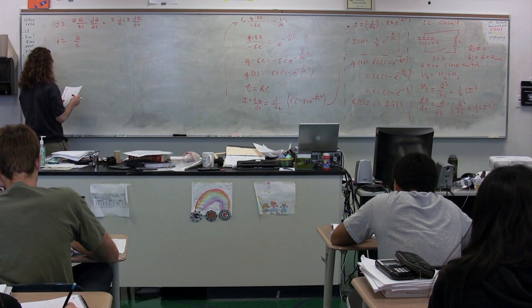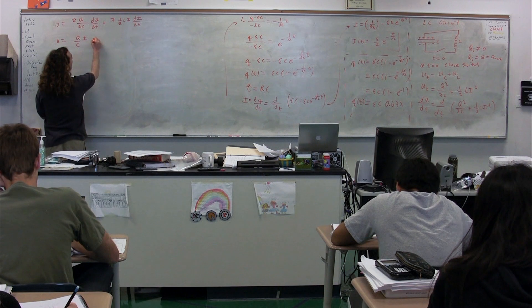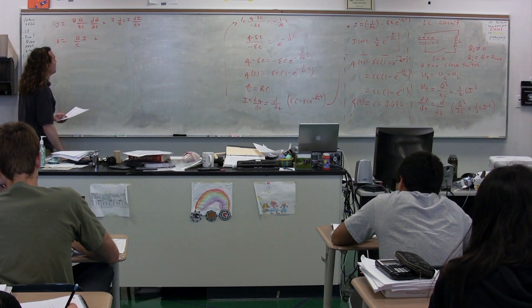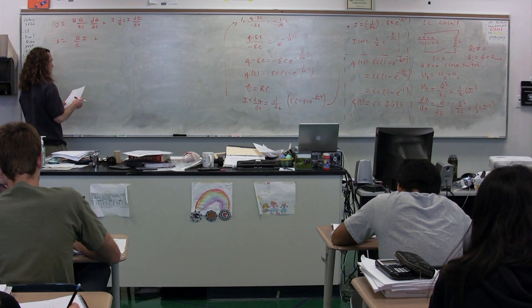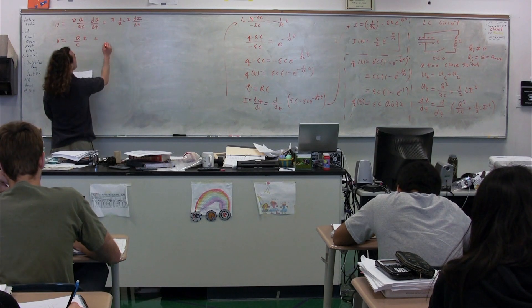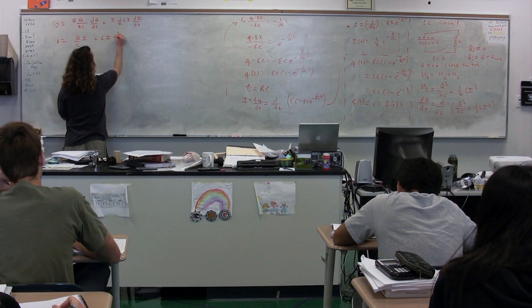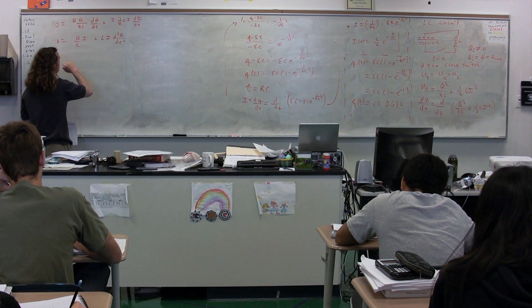We get this. So we know zero is equal to Q over C. We know dQ/dt is just the current. And we know dI/dt then is actually going to be the second derivative of charge as a function of time. So LI times the second derivative of the charge as a function of time.